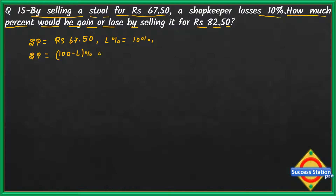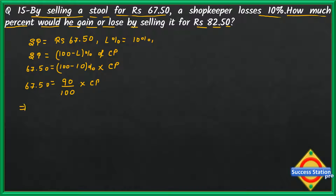Selling price is 67.50 equals 100 minus 10 percent, that is 90 percent. So 90 divided by 100 into cost price. So we can find cost price: cost price is equal to 67.50 into 100 divided by 90. The 100s cancel, zeros cancel, so cost price comes out to rupees 75.